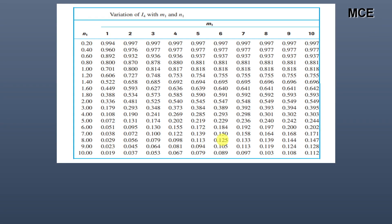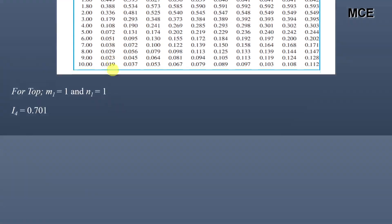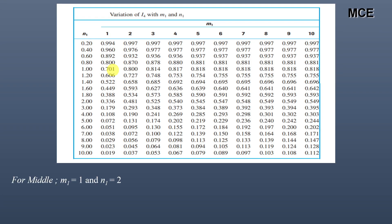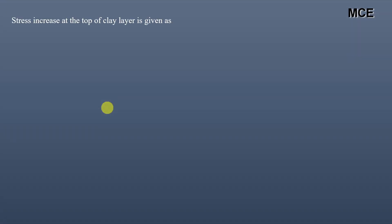Using tables from any standard geotechnical engineering book, we find the influence factor I4 using m1 and n1 values. For the top of the clay layer, m1 = 1 and n1 = 1, giving I4 = 0.701. For the middle of the clay layer, m1 = 1 and n1 = 2, giving I4 = 0.336. For the bottom, m1 = 1 and n1 = 3, giving I4 = 0.179.